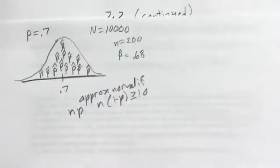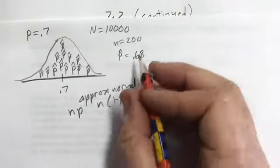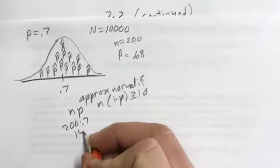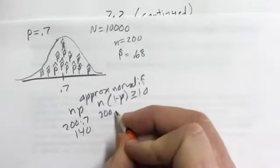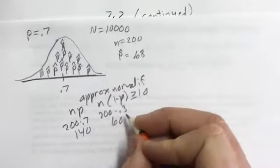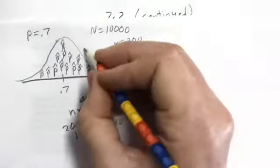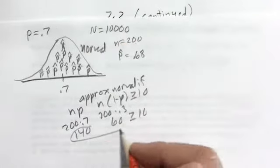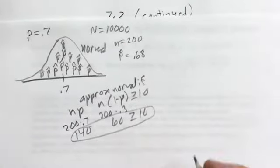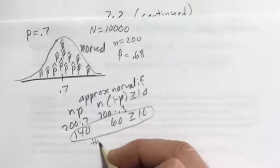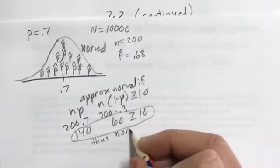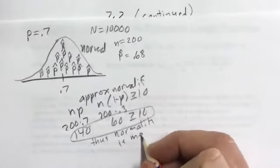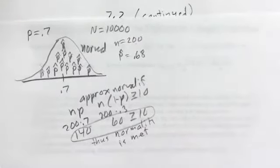This sampling distribution — this collection of P-hats — will be approximately normal if n times P and n times (1 minus P) are both greater than 10. So that's our first condition to check. Here, 200 times 0.7 equals 140, and 200 times 0.3 equals 60 — both greater than 10, so normality is met. We can use normal CDF and inverse norm.